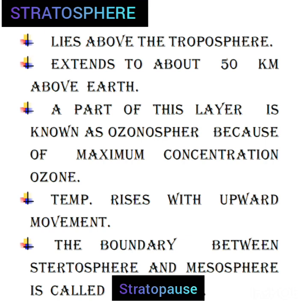The next layer is the stratosphere. The stratosphere lies above the troposphere and extends to about 50 kilometers above the Earth's surface. A part of the stratosphere is known as the ozonosphere, as it has the maximum concentration of ozone in the atmosphere.